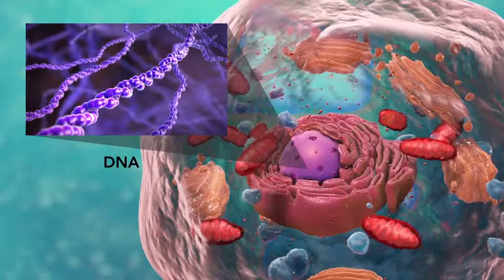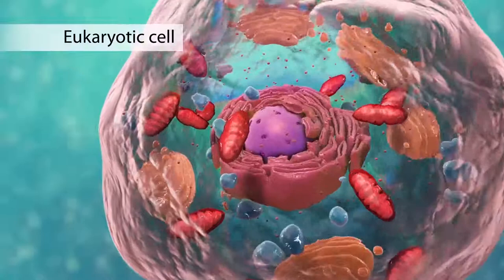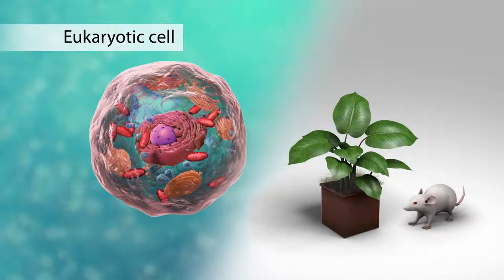There are two broad categories of cells. The first category is eukaryotic cells. They have organelles which include the nucleus and other special parts. Eukaryotic cells are more advanced complex cells such as those found in plants and animals.